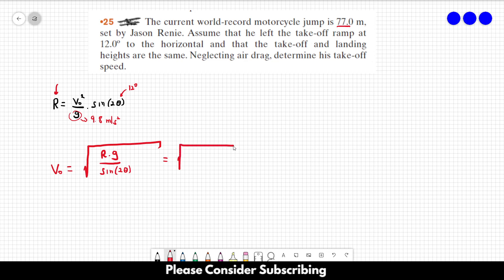And this is equal to 77 times 9.8 divided by the sine of 24 degrees. And this gives us about 43.1 meters per second.